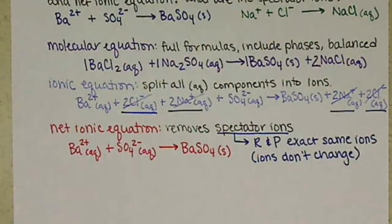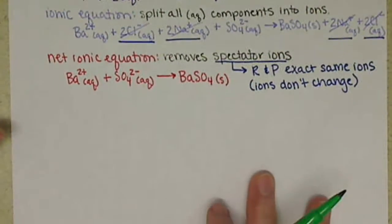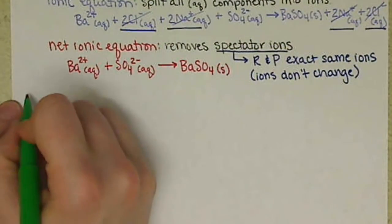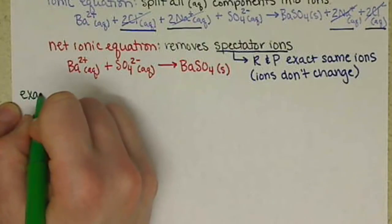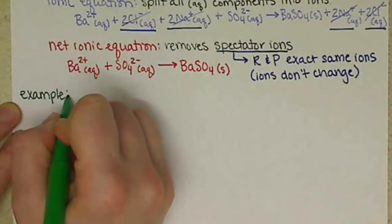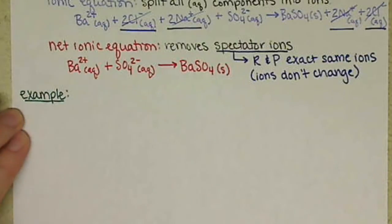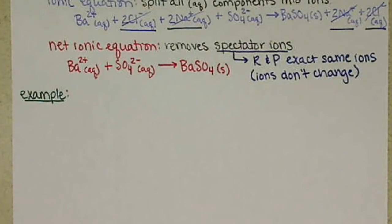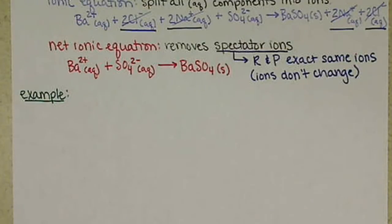Let's have you try an example on your own, then I'll briefly go through the solution. We want to look at the reaction between lead(II) nitrate and sodium iodide. We want to ask all the same questions: what are the products, what are their phases, what is the molecular equation, ionic equation, net ionic equation, and what are the spectator ions?